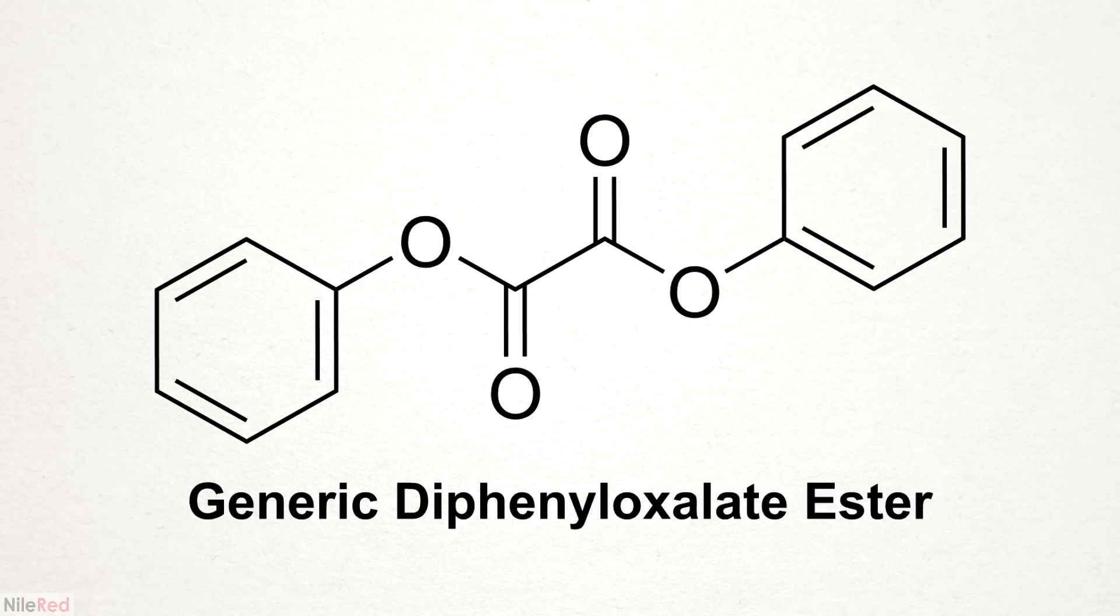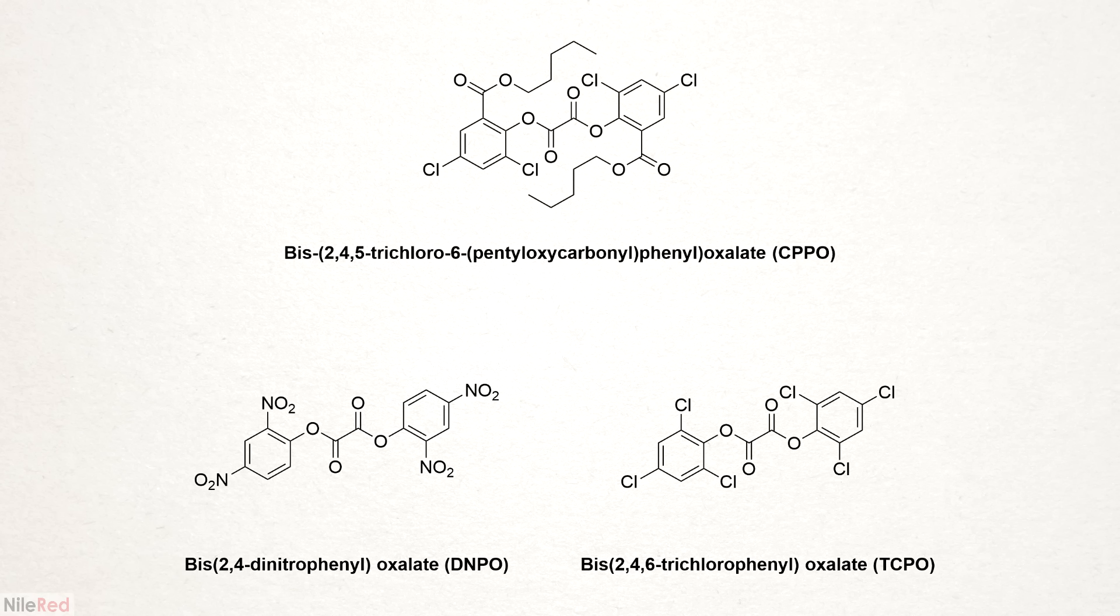Pretty much all glow sticks are based on molecules known as diphenyl oxalate esters. From glow stick to glow stick, the exact oxalate ester might change a little, but the core structure is always the same. For this video, I've decided to make bis-2,4,6-trichlorophenyl oxalate, or TCPO for short.